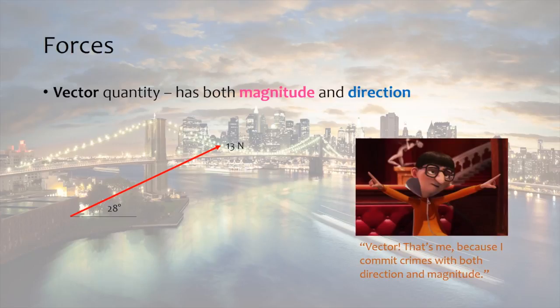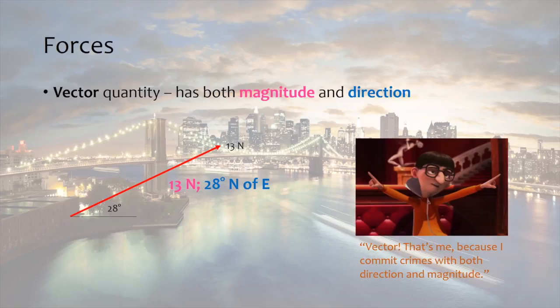For example, let's look at this force vector. How would we define this force? Do we just say this force is 13 newtons? No, because force is a vector, and the direction of the force plays a huge role when it comes to calculations. Instead, we should say that this force is 13 newtons at 28 degrees north of east.